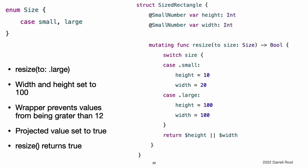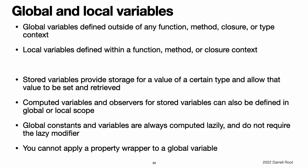Because property wrapper syntax is just syntactic sugar for a property with a getter and a setter, accessing height and width behaves the same as accessing any other property. For example, the code in resize2 accesses height and width using their property wrapper. If you call resize2.large, the switch case for .large sets the rectangle's height and width to 100. The wrapper prevents the value of these properties from being larger than 12, and it sets the projected value to true to record the fact that it adjusted their values. At the end of resize2, the return statement checks $height and $width to determine whether the property wrapper adjusted either height or width.